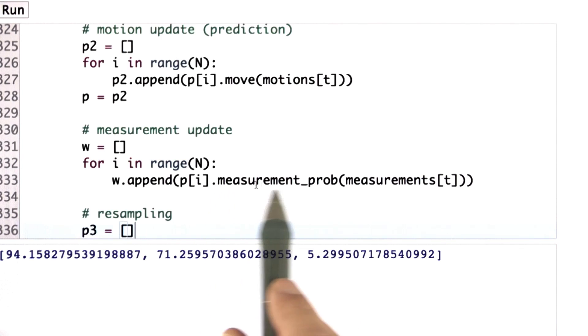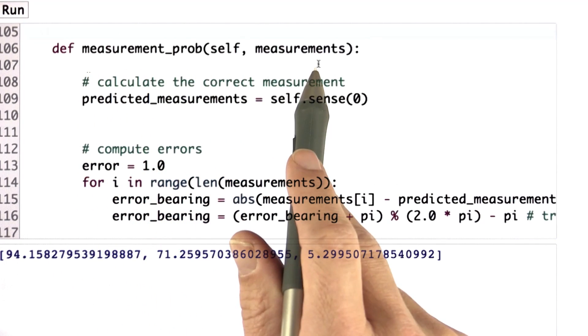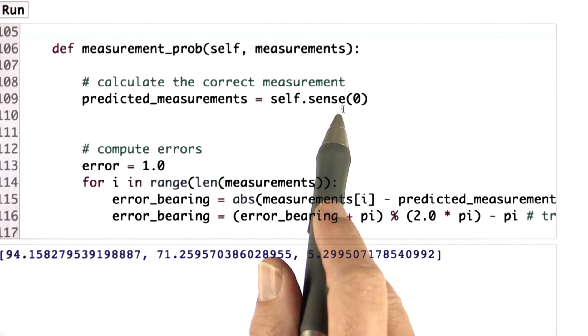And I'm also supplying you the measurement probability function, which is part of the implementation. So let's just go there. So here is the measurement probability function. There's something non-trivial here. I compute the predicted measurements.